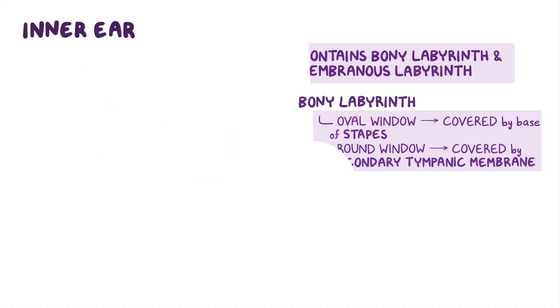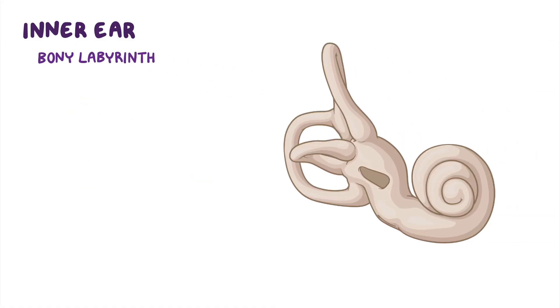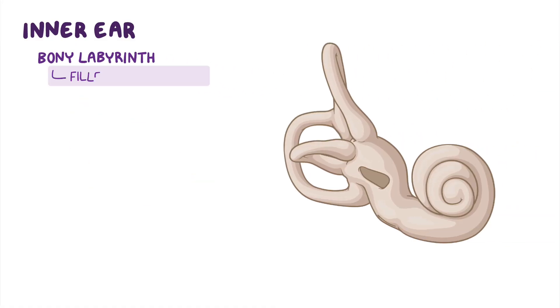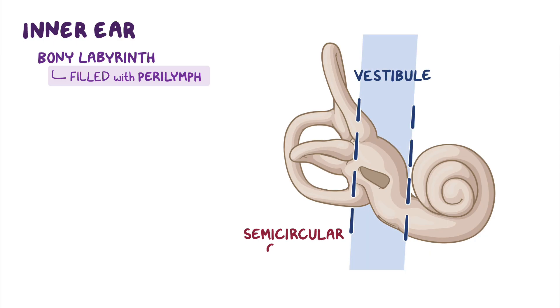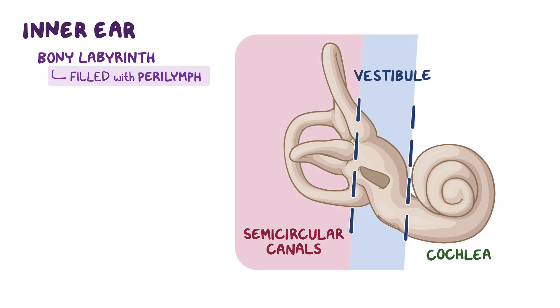The bony labyrinth within the otic capsule is filled with perilymph and is made of a series of cavities, which are the vestibule, the semicircular canals, and the cochlea.